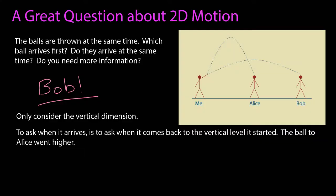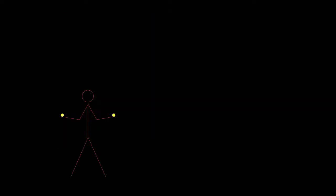You could tell from the video that the ball to Alice, in this case, took about twice as long to get to her as the one to Bob. If you're still a little confused, consider this.